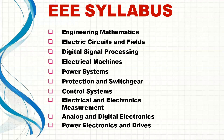The EEE syllabus includes: first, Engineering Mathematics; second, Electrical Circuits and Fields — covering circuit theory concepts and electromagnetic field; third, Digital Signal Processing — signals, transformations, Laplace; and fourth, Electrical Machines — transformer, DC machines, AC machines, and special electrical machines. Electrical Machines is a very important, high-weightage subject.